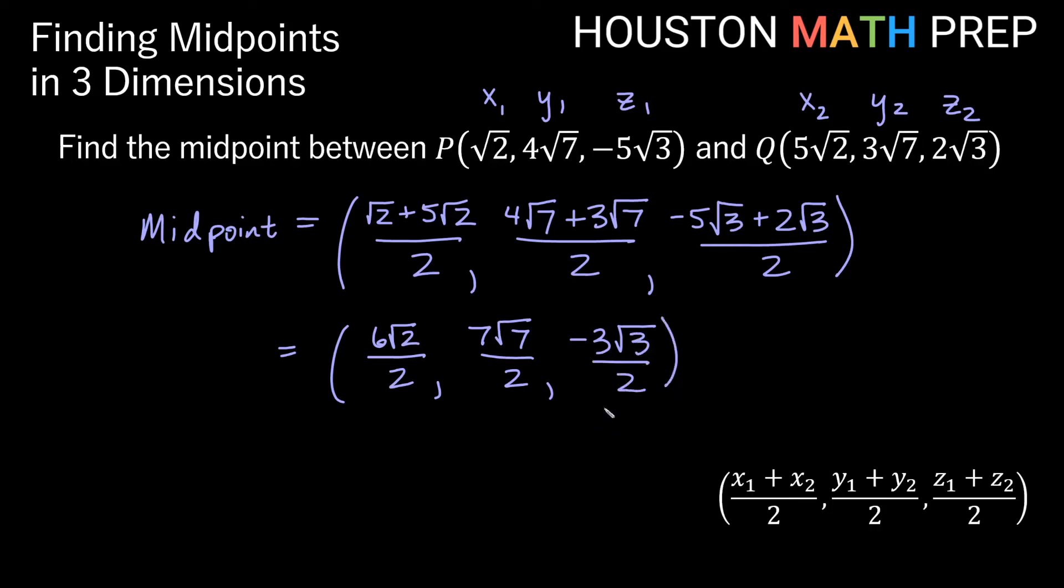We look for anything that we can reduce. We reduce only the outsides here. We can't reduce things inside a root with something that's outside of a root down below. So really the only thing that reduces here is 6 over 2.